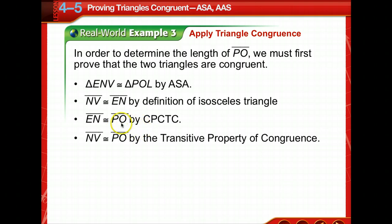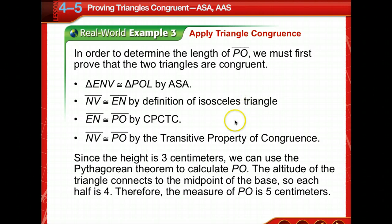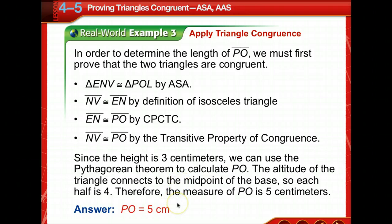By the transitive property, since this one is equal to EN and this one is equal to EN, then by transitive, these two are congruent. Since the height is three centimeters, we can now use the Pythagorean theorem to calculate PO. The altitude of the triangle connects to the midpoint of the base, so each half is four centimeters. We've got three squared plus four squared equals five squared, using the Pythagorean theorem. So PO is five centimeters.